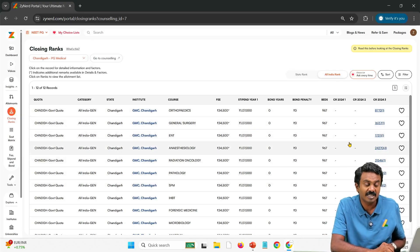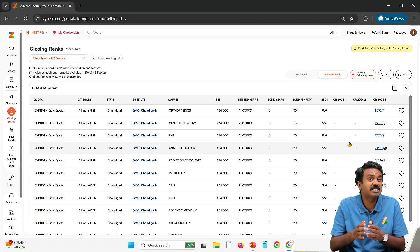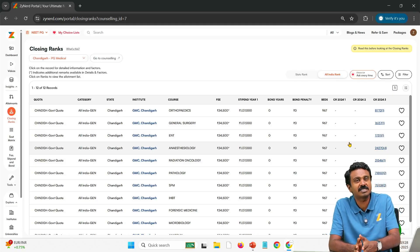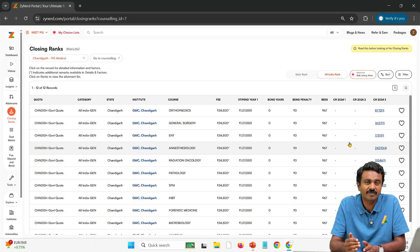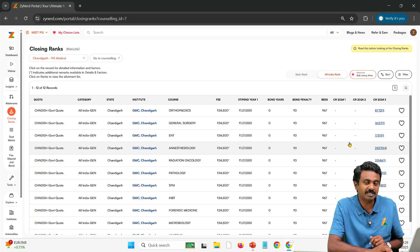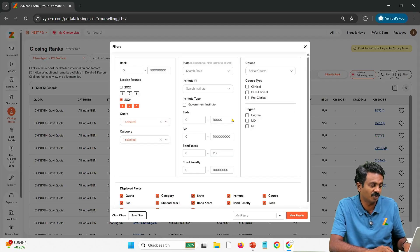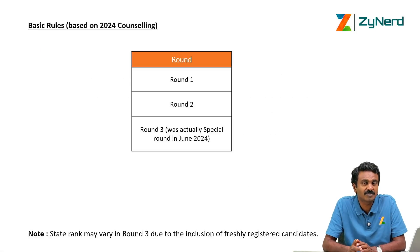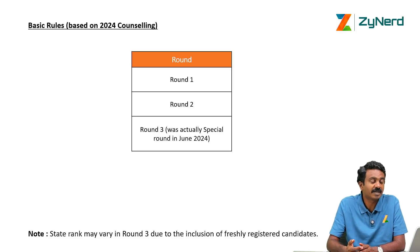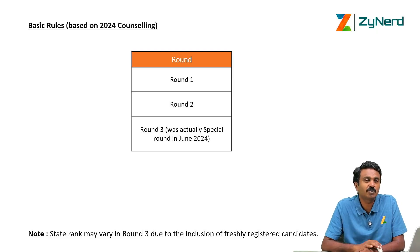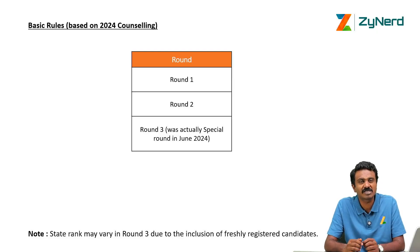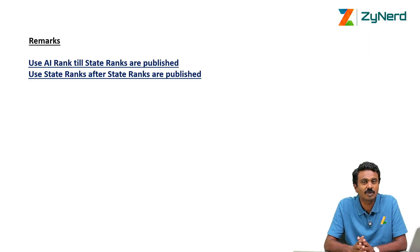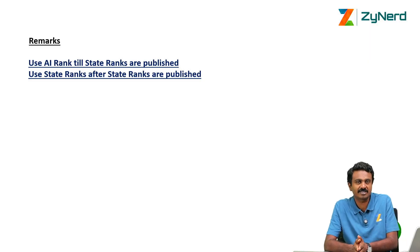Don't go by these ranks as a strict guide, because no candidate was able to know which seats were available at what rank last year. Only those who knew about the available seats based on the June 2024 notification were able to get those seats; the rest did not participate. But this year there will be participation, so there might be higher competition — this is just a reference for you. Round 1 and Round 2 were proper rounds with 50% IP and 50% Chandigarh city candidates. Round 3 was a special stray round with new rules of All India merit at 50%. Round 3 ranks may vary because additional candidates were able to register. For the round-wise rules, we will also take you through once the Chandigarh prospectus is published. Use All India ranks until state ranks are published, then use state ranks after they are published.